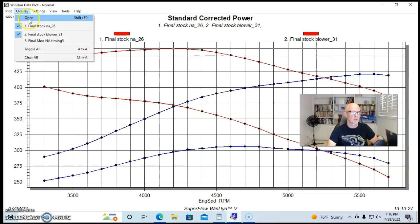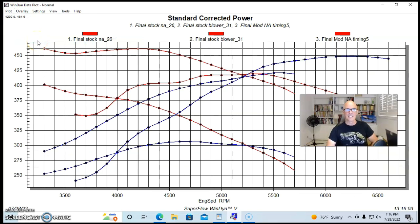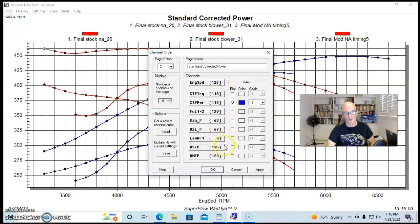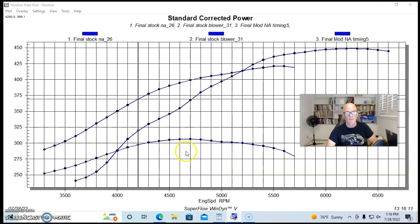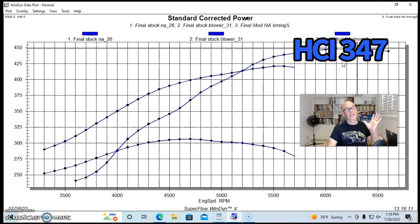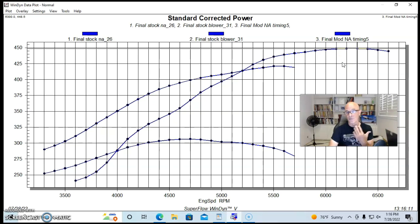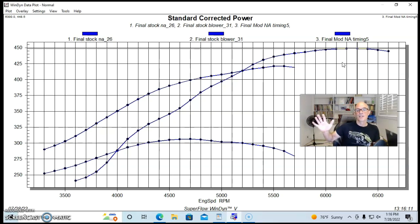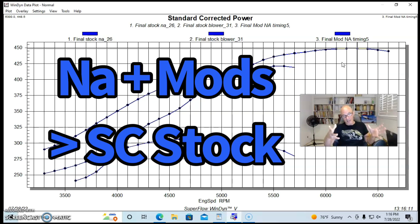I'm going to show you what happened when we did that upgrade on the naturally aspirated version. The lowest one is the stock NA combination. The one making the most power up here is the NA version after we put the heads, cam, and intake manifold on there, and it's making 449 horsepower with the RHS head, the RPM2 intake manifold, and that XFI camshaft.